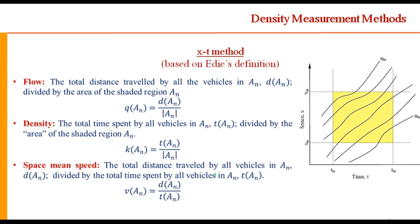In the XT method, which is based on Edie's definition of parameters, you plot the trajectory of different vehicles moving on the road. If you have a loop detector here and a loop detector here, this is the distance between the two loop detectors. On a time-space diagram you plot the trajectory of each vehicle, then calculate how much time each vehicle spends in this loop and how much distance the vehicle travels. Flow is the total distance traveled by all vehicles in area A divided by the total area.